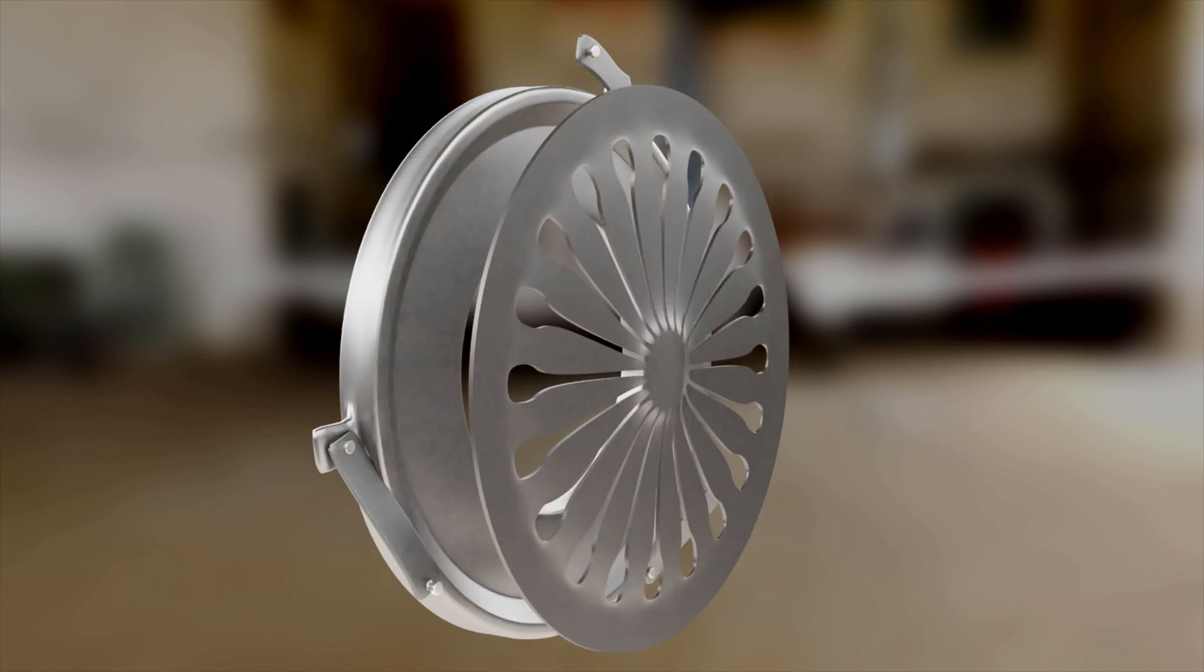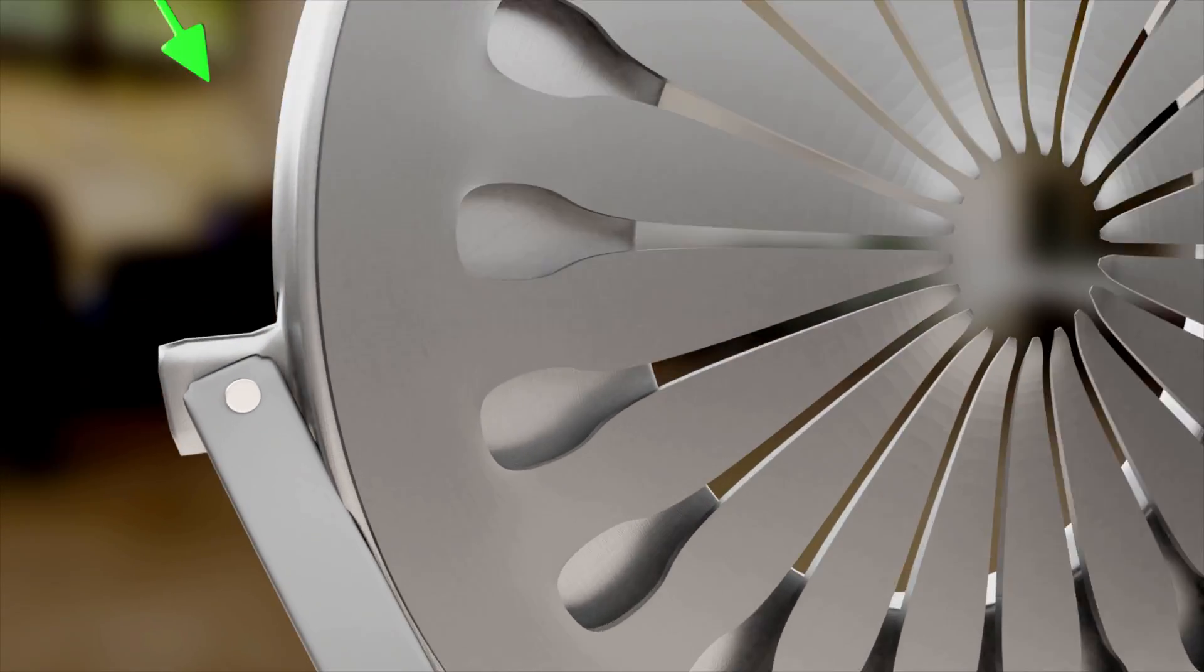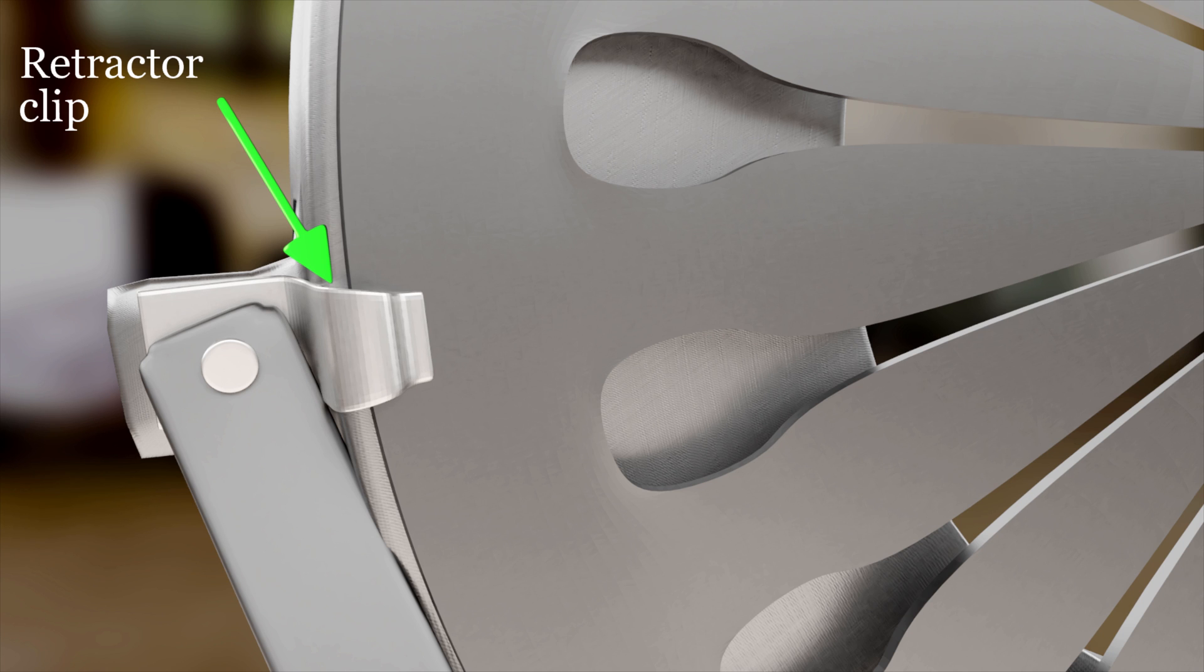The back side of the pressure plate is connected to the outer edge of a spring called the diaphragm spring with the help of a retractor clip.